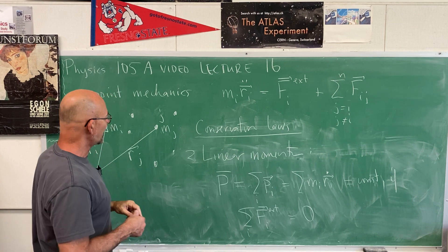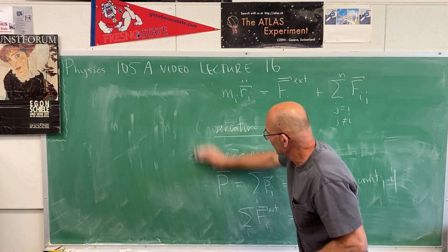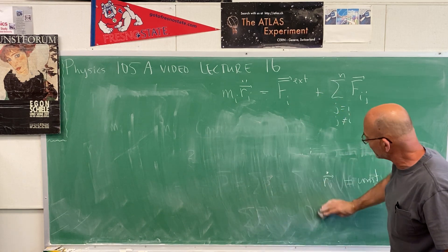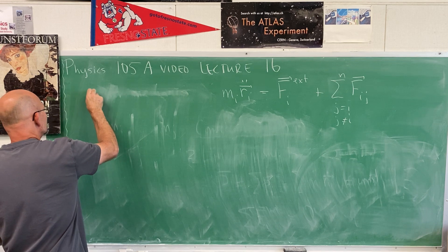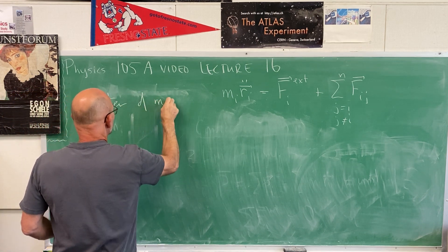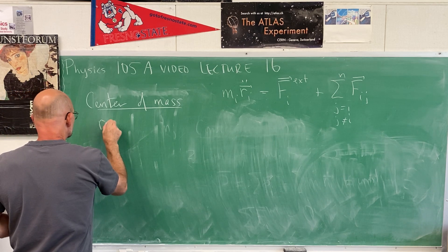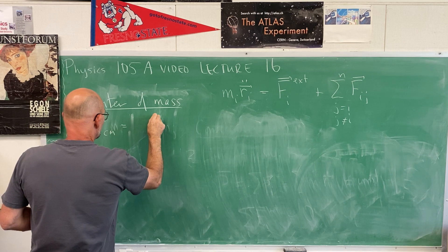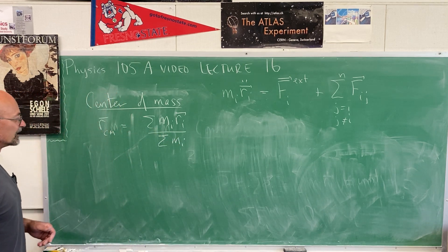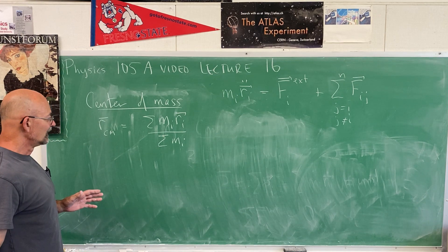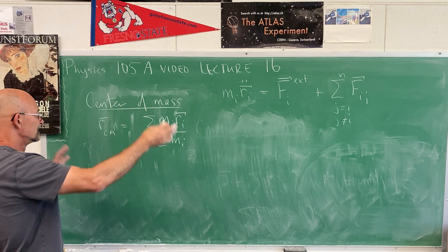From linear momentum we have an interesting corollary concerning the center of mass. For this collection of particles, the center of mass is the sum of the mass-weighted position vectors divided by the total mass — it's that point in space. For a point system, the center of mass doesn't have to lie on any particle; it's just some location within that set of masses.